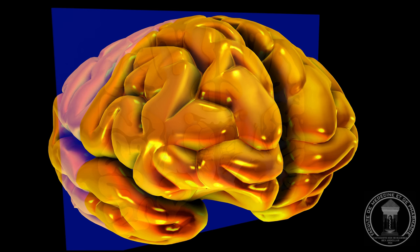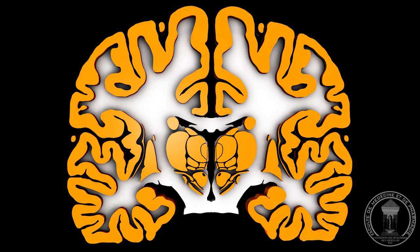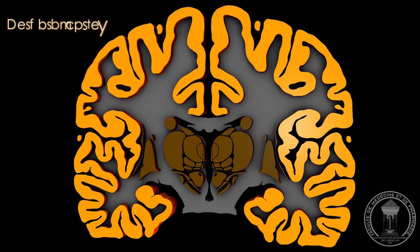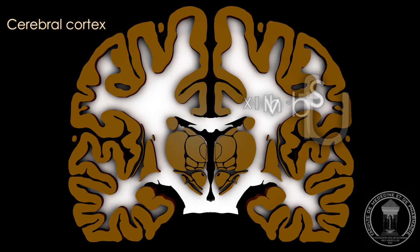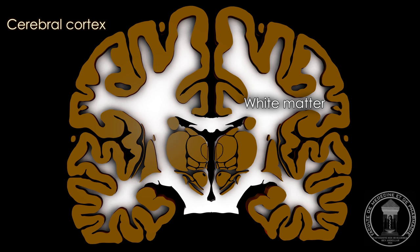Each cerebral hemisphere is divided into two distinct regions: a peripheral part, the cortex, or gray matter, that contains the bodies of nerve cells; and the central part, made of white matter, that contains the axonal extensions of neurons and their myelin sheath.